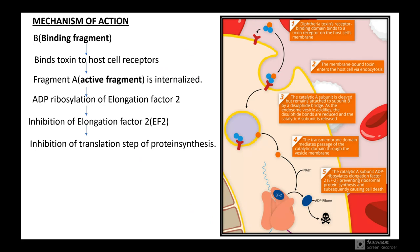The mechanism of action of Pseudomonas exotoxin A: Fragment B is the binding fragment that binds to the host cell receptor. Fragment A is the active fragment that gets internalized and causes ADP-ribosylation of elongation factor 2. Following this ADP-ribosylation, there is inhibition of EF-2, leading to inhibition of the translational step of protein synthesis.